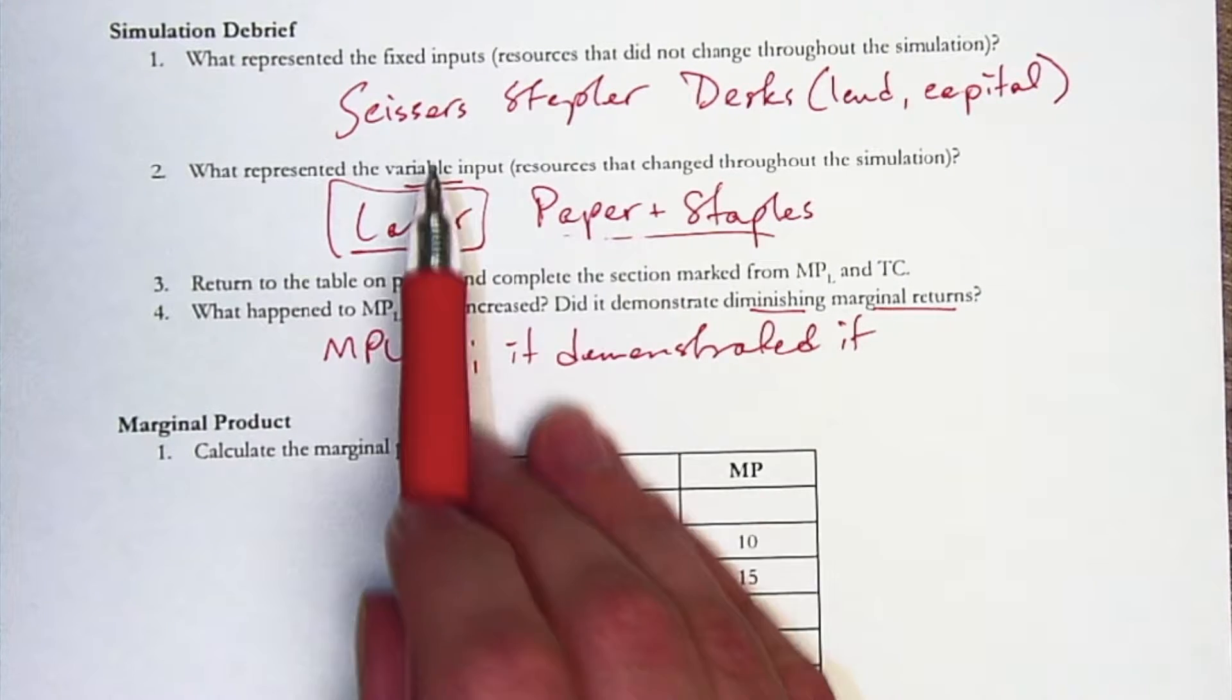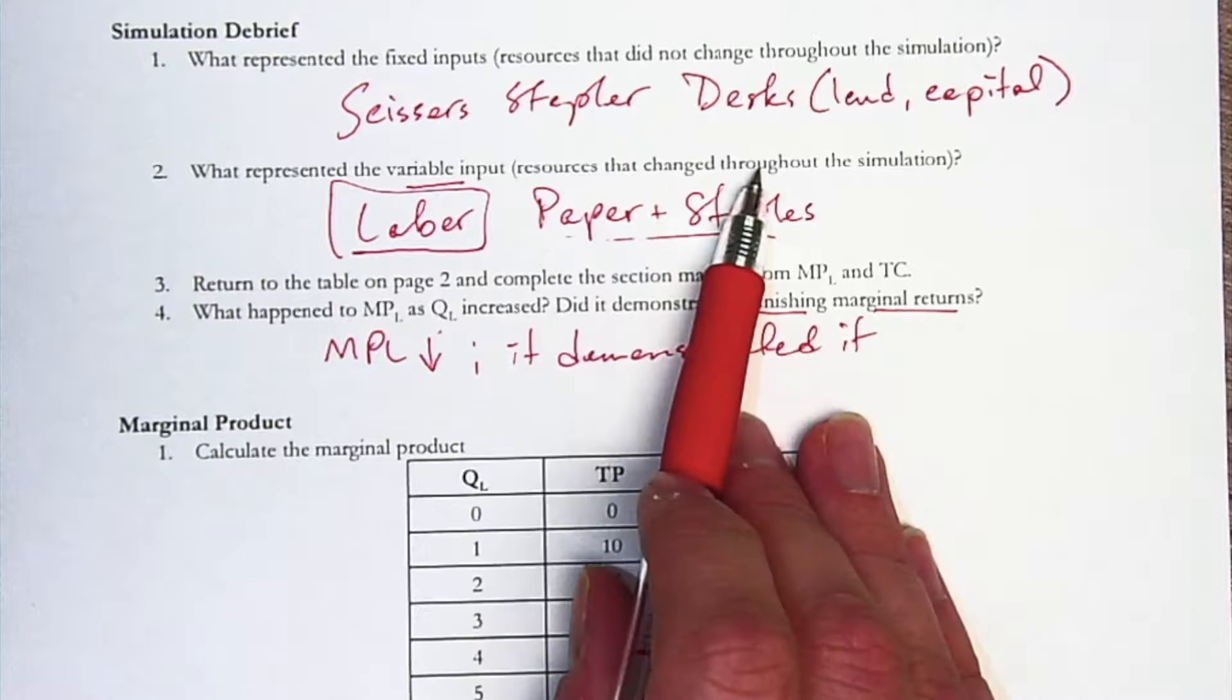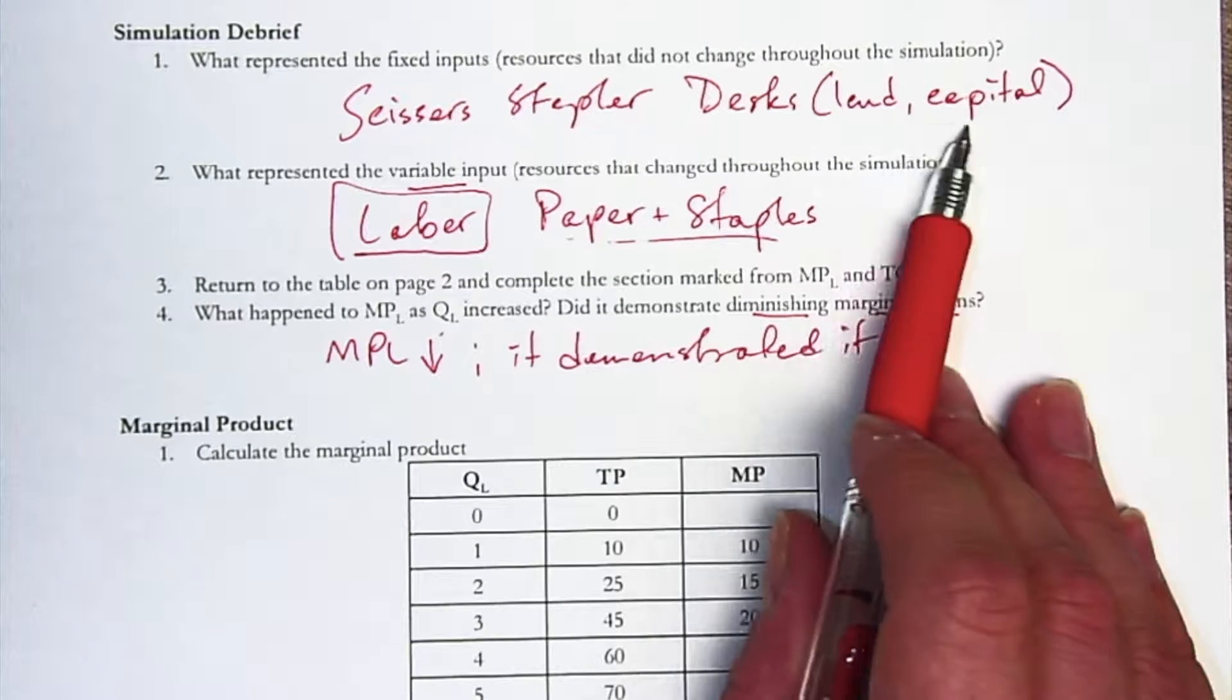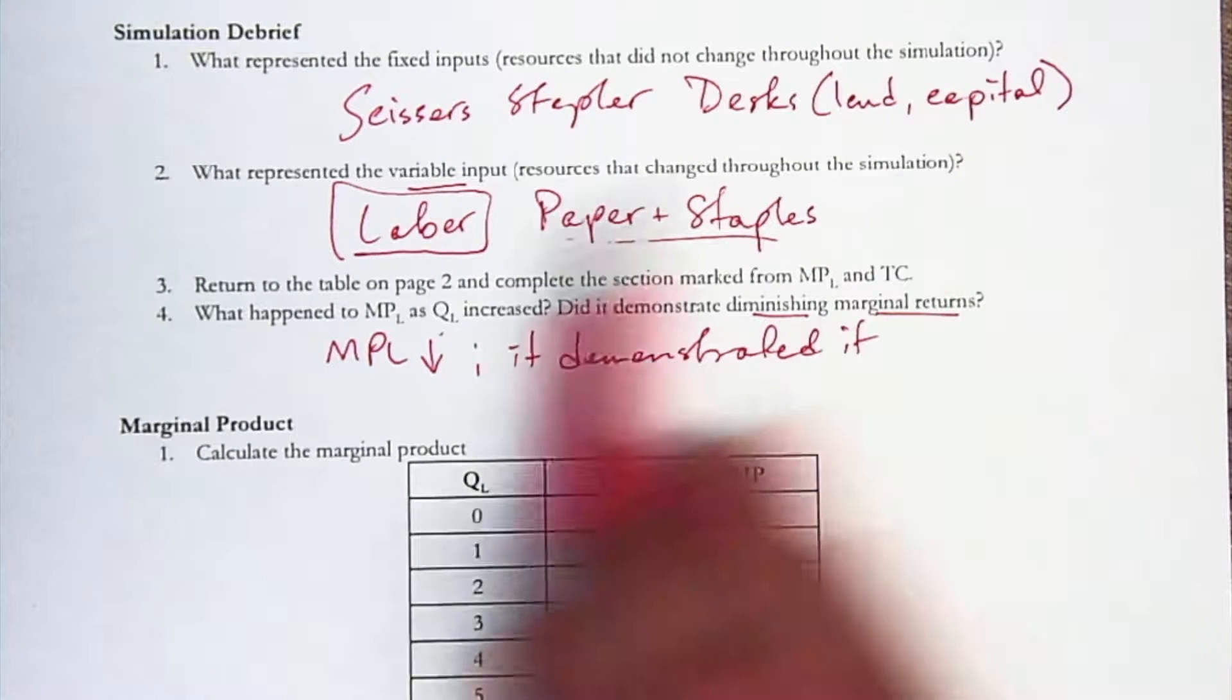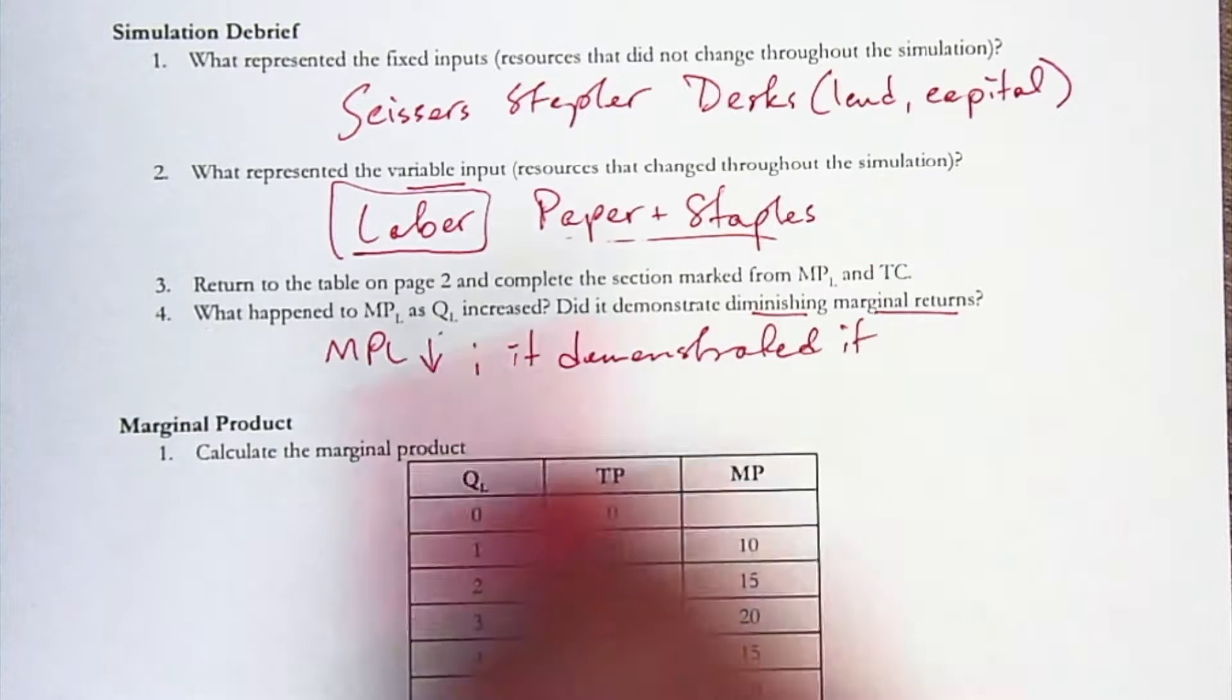But a couple of things first is to know the fixed inputs in our simulation were the scissors, the stapler, and the desks, and those kind of represent the land and the capital resources. The variable input was primarily labor. We added a unit of labor every single round, so that changed that simulation.